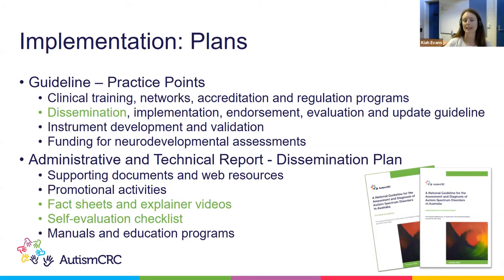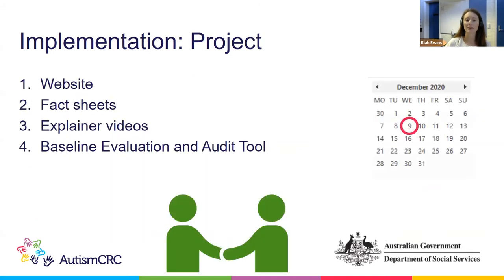We also had another supporting document, the administrative and technical report, which had a dissemination plan. Some of the activities we indicated we would like to focus on were producing fact sheets, explainer videos, and a self-evaluation checklist for clinical services. We were very fortunate that the Autism CRC was able to negotiate a collaboration with the Department of Social Services, which allowed us to develop an implementation toolkit.